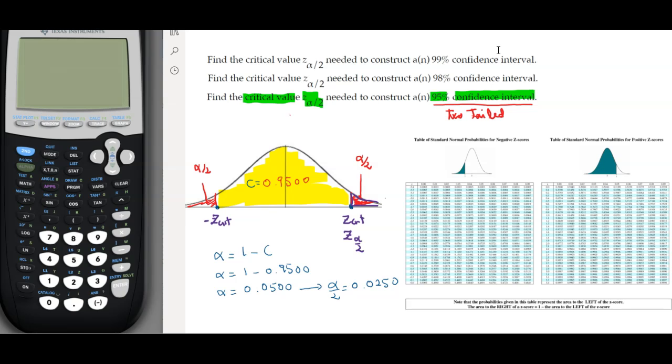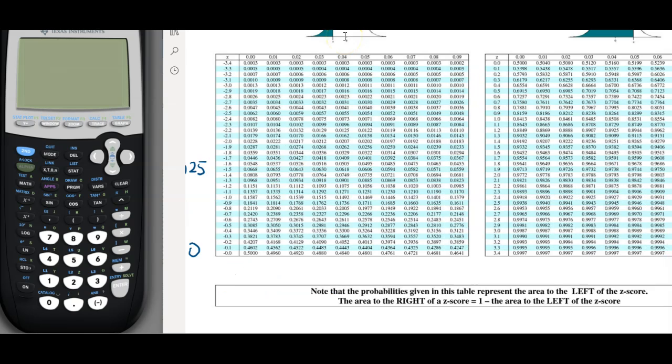Once we determine that value we can use our table. The easiest way to use the table is to use the reflection. If this area is going to be 0.025, this area on the left side would be the same, 0.025.